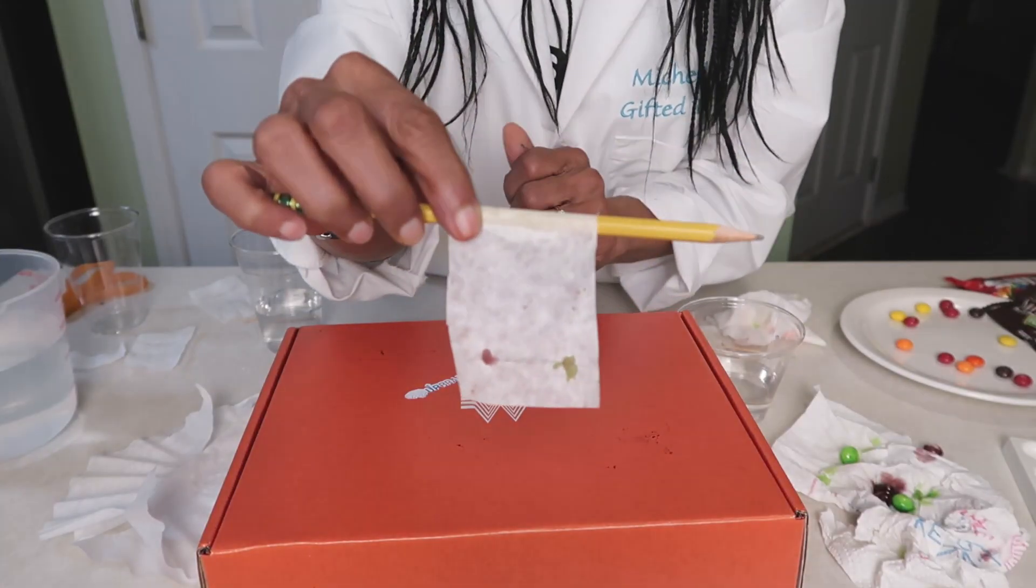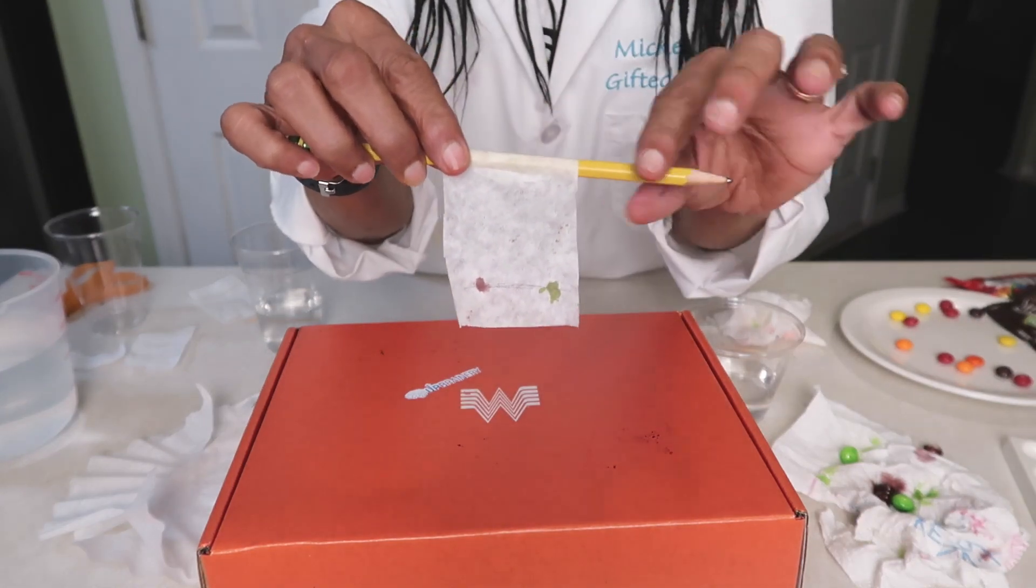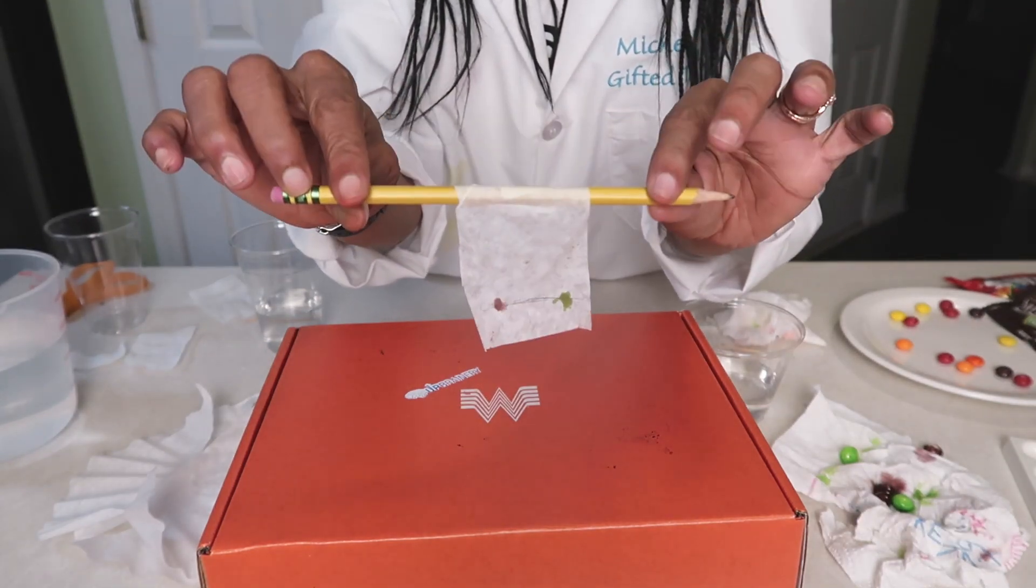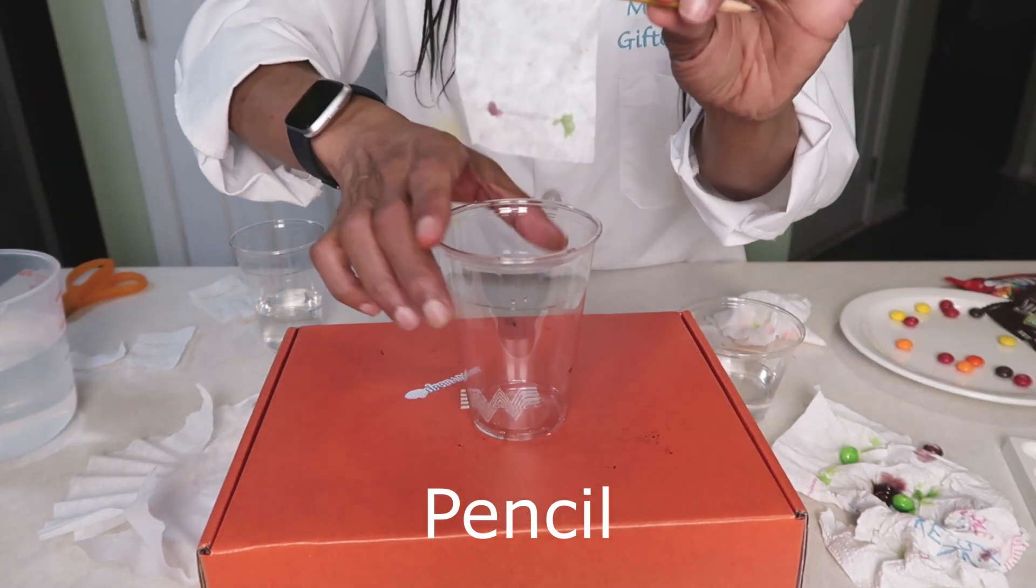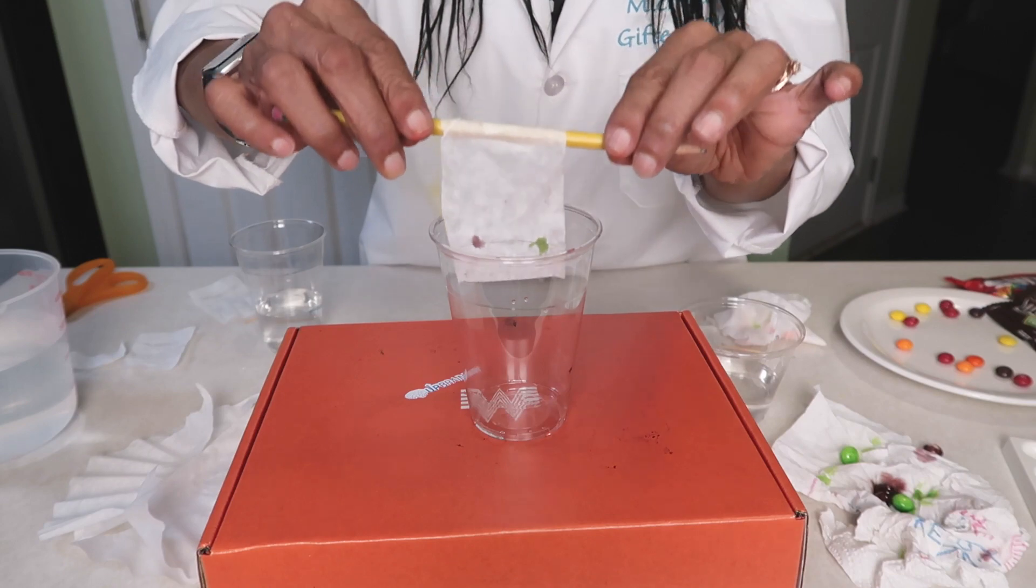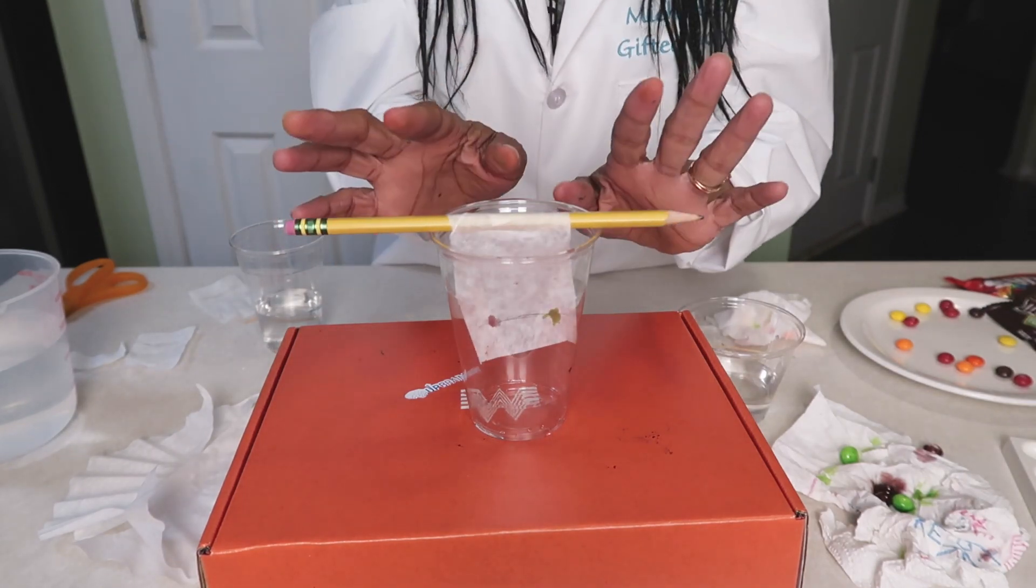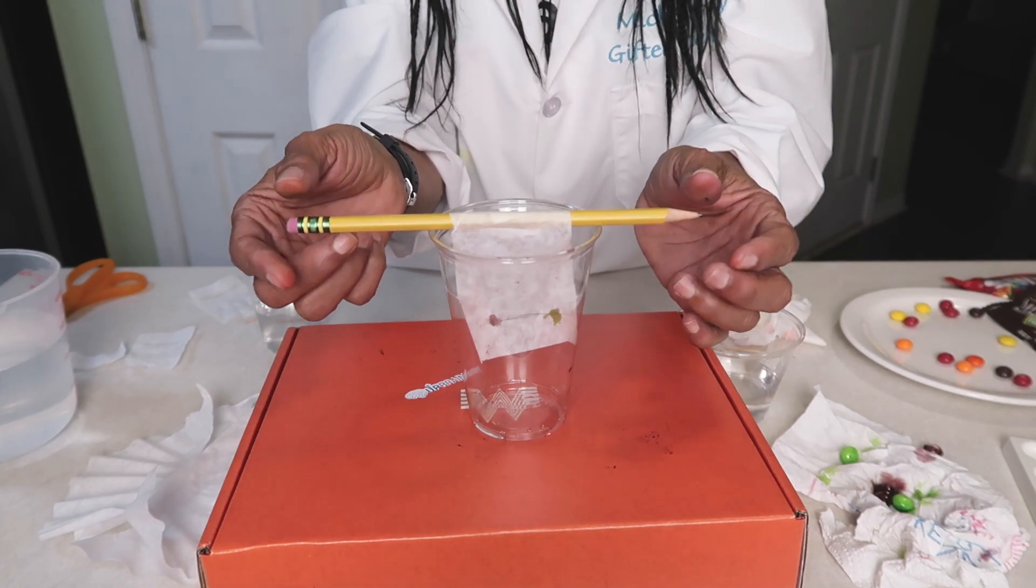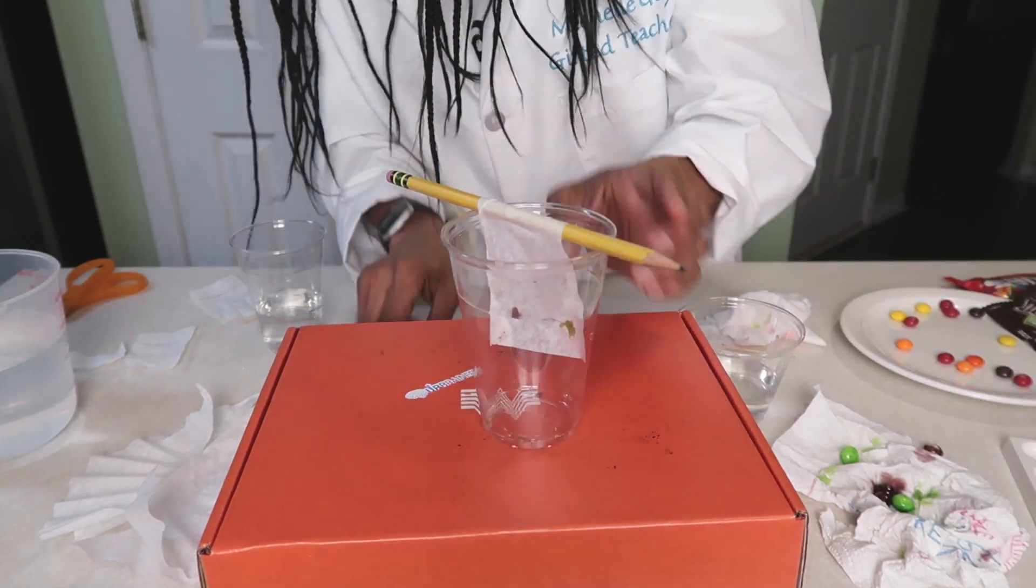So the next step I did was I went on and put the color on the coffee filter. I taped the coffee filter onto the pencil. Now we're going to take our clear cup and decide how much of our solution we're going to need.